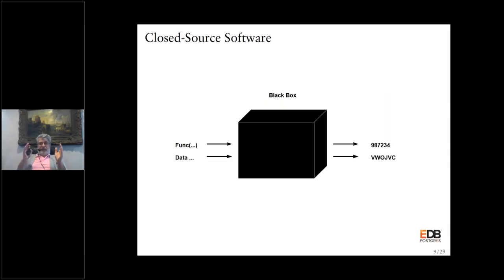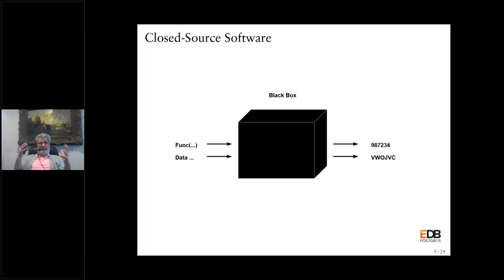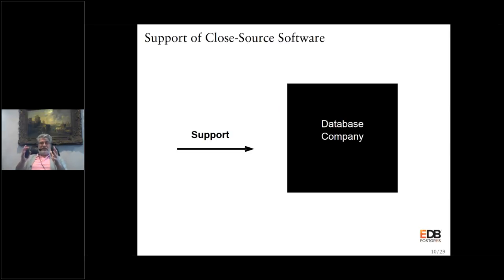This is the traditional proprietary closed-source customer — Oracle, DB2, or Microsoft SQL. It's a black box. You can't see the source code; only the employees of the vendor company can. So it's incredibly hard for another company to support Oracle. Oracle can support Oracle because they can see the source code, but other companies have tremendous difficulty because they also have to guess what's in that black box, where the bugs are. It's a very inefficient process to have another vendor get involved if they can't see inside the source code.